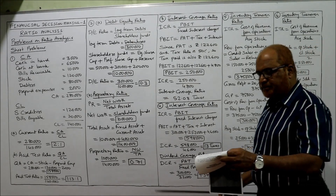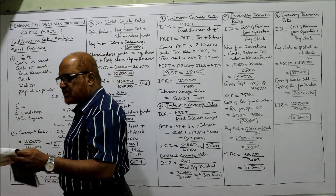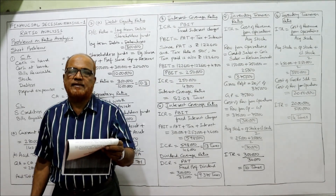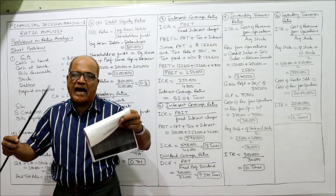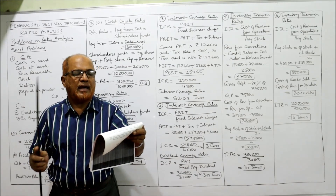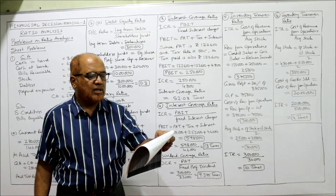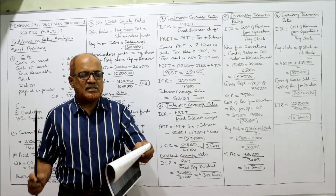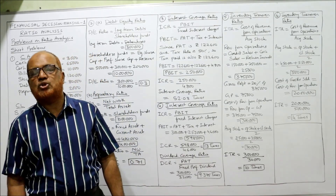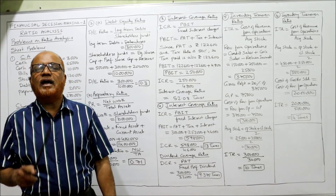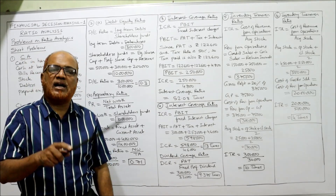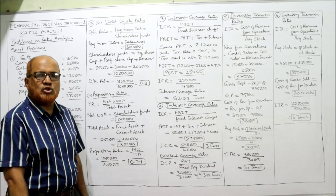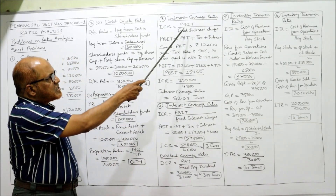Now the fourth problem: from the following particulars calculate the coverage ratios. Net profit after interest and taxes (PAT) is 3,00,000. Income tax paid is 2,52,000. Interest is 46,000 and preference dividend is 32,000. Two coverage ratios are asked: interest coverage ratio and dividend coverage ratio. For interest coverage ratio, the formula is PBIT divided by fixed interest charges. PBIT must be calculated.